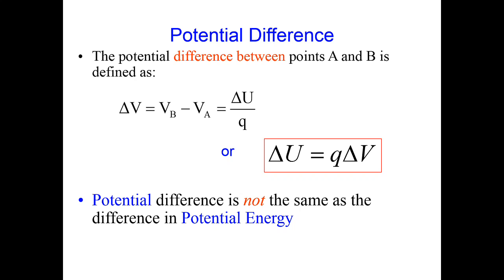Welcome back. In the last lecture, we went over the concept of potential energy in a uniform electric field and how we can find the potential energy by finding the amount of work done by the electrostatic force. From this, we learned that the electrostatic potential energy in a uniform electric field is equal to Q, the charge, times the electric field times the displacement in meters.